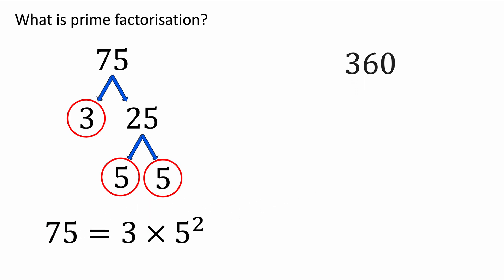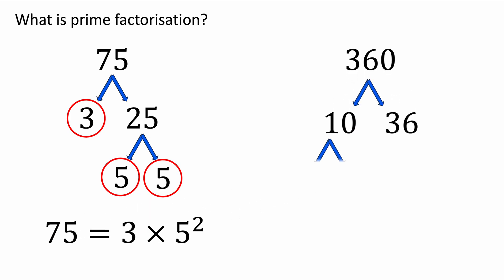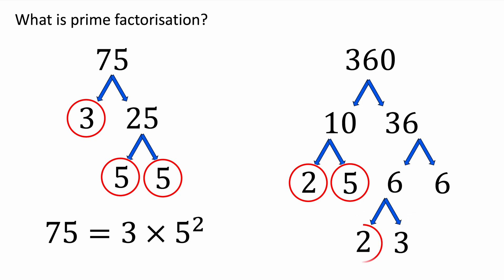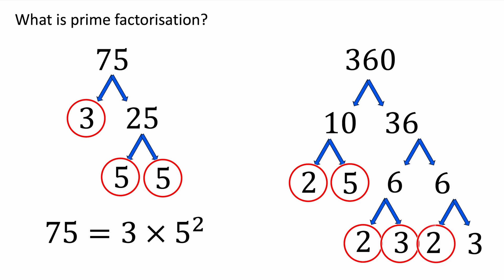Let's also do this with the number 360. We'll split that into 10 times 36. 10 is 2 times 5 — both prime, so we circle them. 36 is 6 times 6, and 6 is 2 times 3. We'll circle the 2 and the 3 because they are both prime.